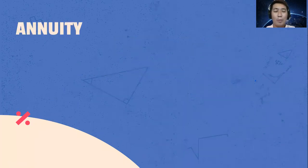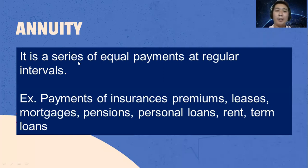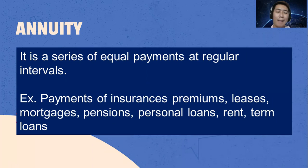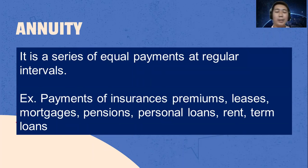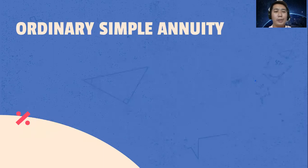What is annuity? It is a series of equal payments at regular intervals. Examples of the application of annuity include payments of insurance premiums, leases, mortgages, pensions, personal loans, rent, or term loans.